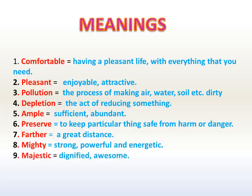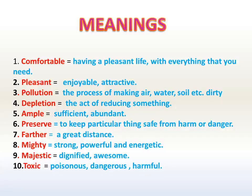Ninth one: majestic — means dignified and imposing. Tenth one: toxic — means poisonous, dangerous, harmful. Dear children, you have to write these meanings in your notebook. Try to write each meaning two times — first by reading it, then a second time without looking, to check you remember it.